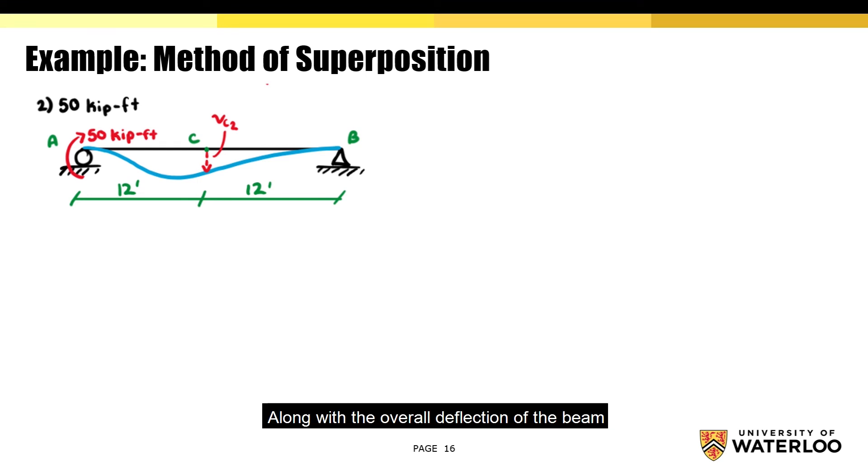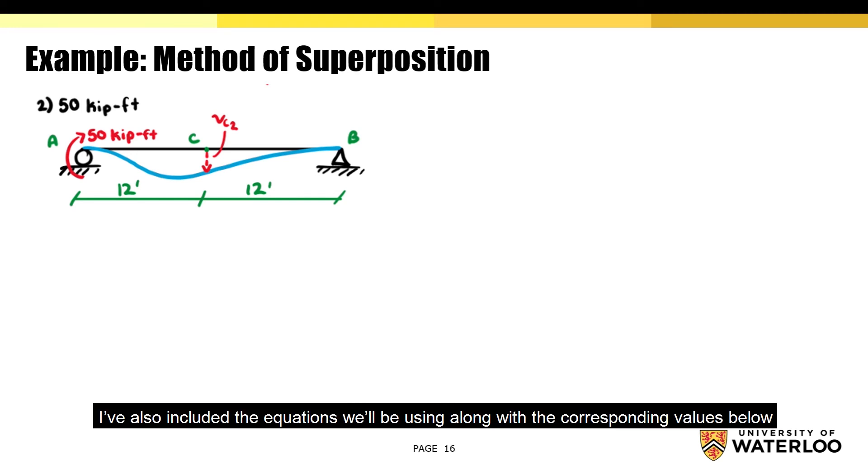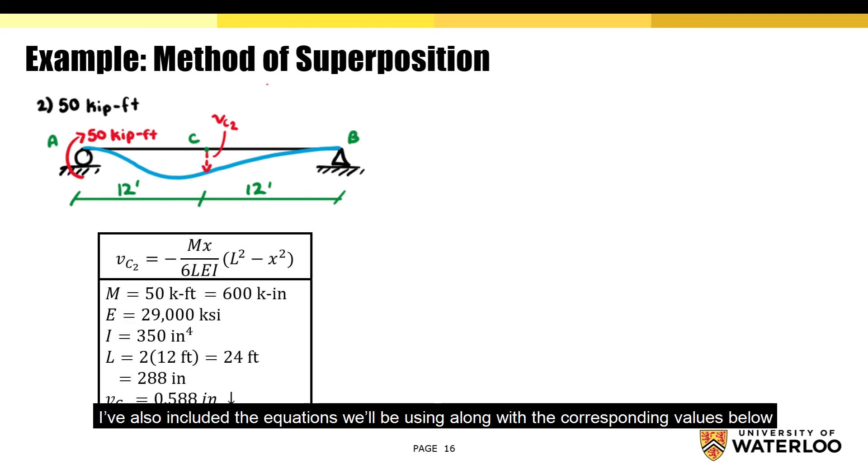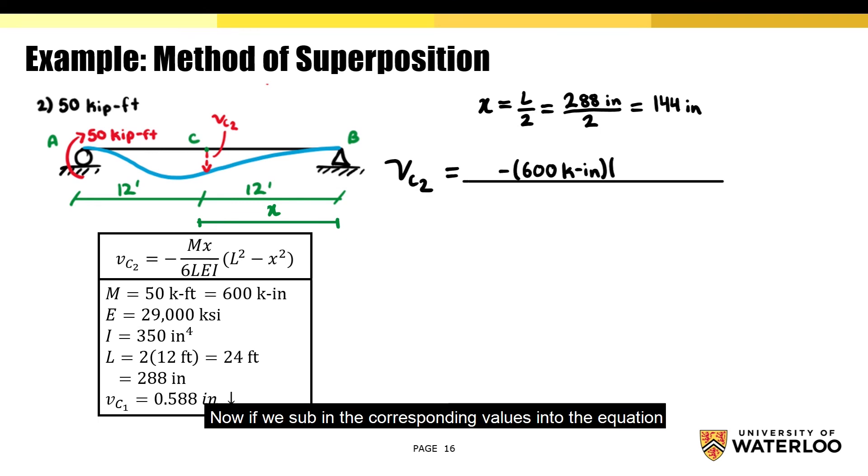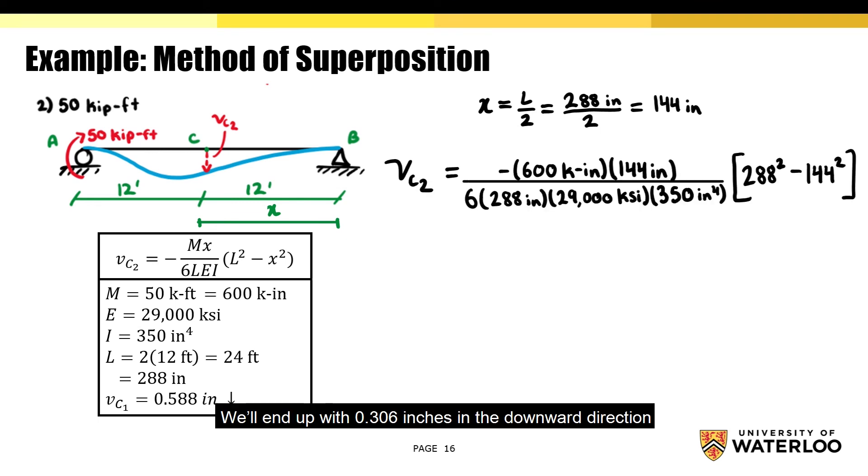Along with the overall deflection of the beam. Just as before, I've also included the equations we'll be using along with the corresponding values below. For this component, x is equal to L over 2, which is equal to 144 inches. Now, if we sub the corresponding values into the equation, we'll end up with 0.306 inches in the downwards direction.